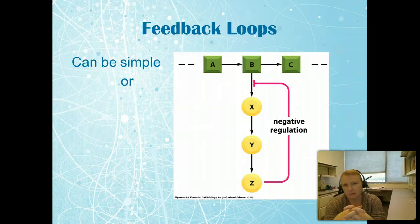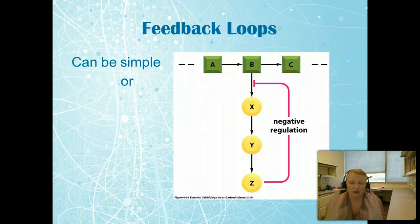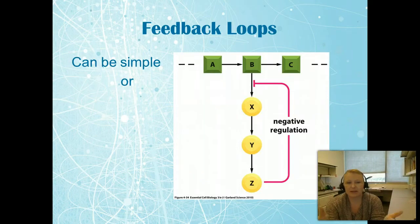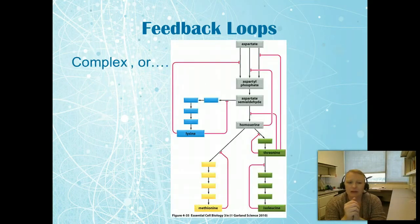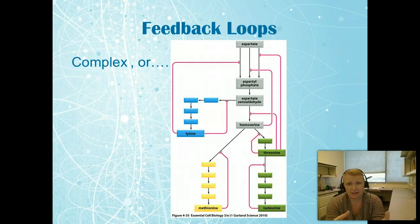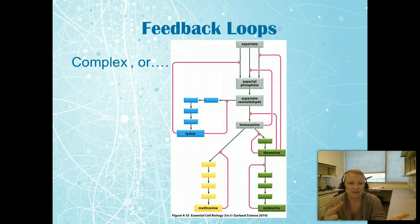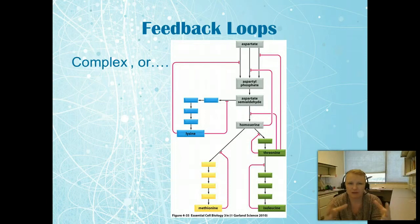Feedback loops are one of the most common controls in the cell. A simple example: B goes to X, goes to Y, goes to Z — once Z is made, the feedback goes back and turns it off, and the product would continue toward C. It can get more complicated, like this example of how cells determine which amino acids need to be produced. These are negative feedback loops, though they're also positive in that they turn on others when certain ones are turned off.